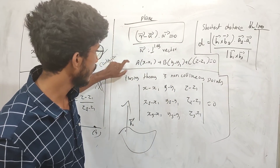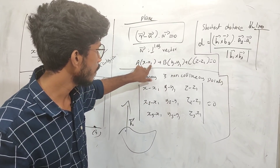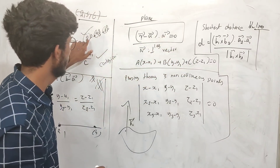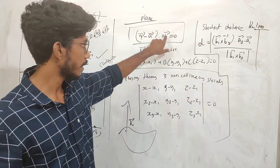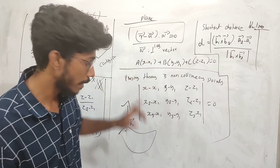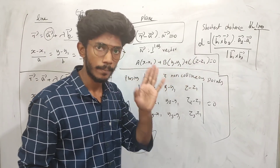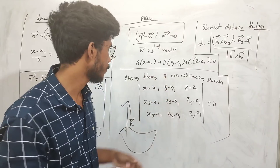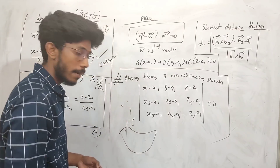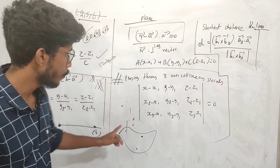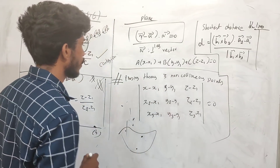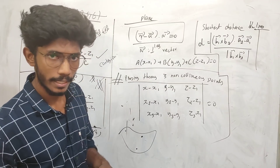It is important to find the equation of a plane. The Cartesian equation of the plane is A(x − x1) + B(y − y1) + C(z − z1) = 0, where A, B, C are the components of the perpendicular (normal) vector. If you have a point (x1, y1, z1) in the plane and three non-collinear points, we can find the equation.